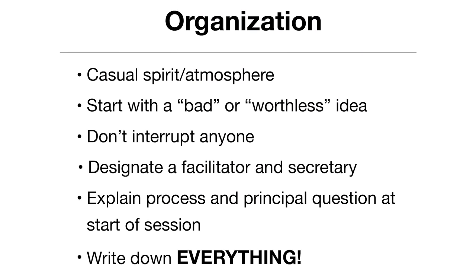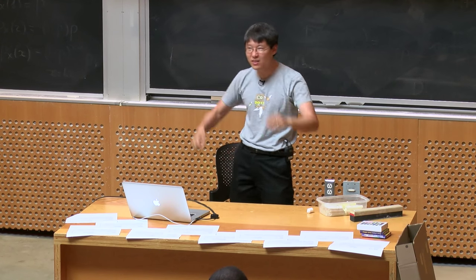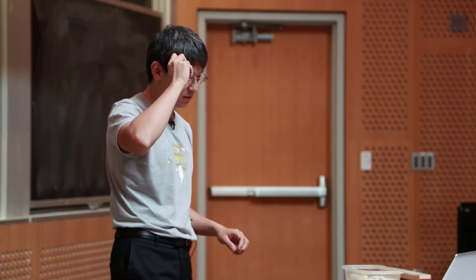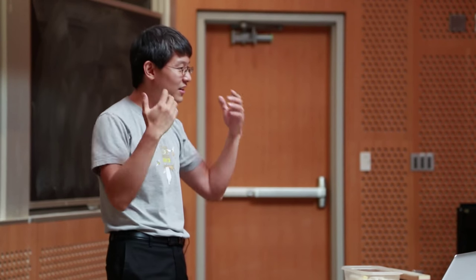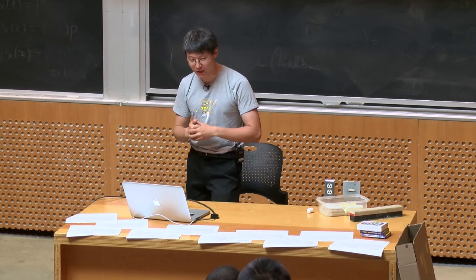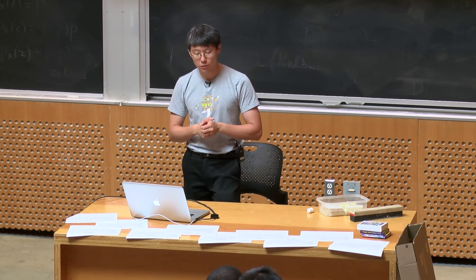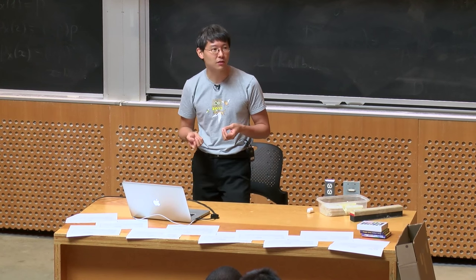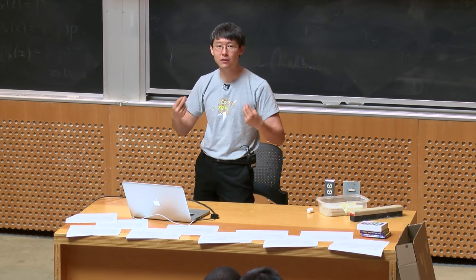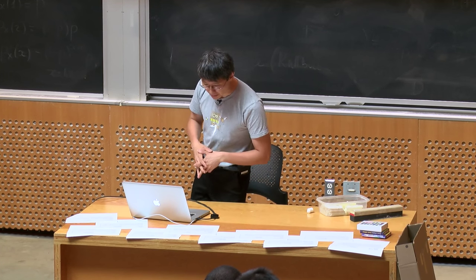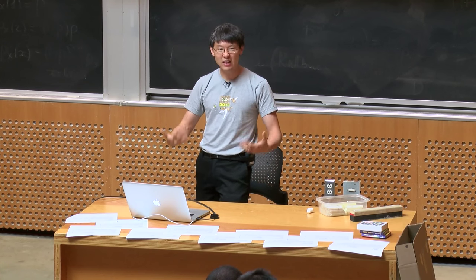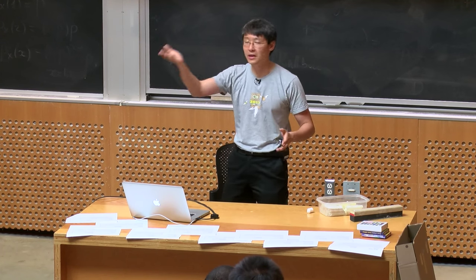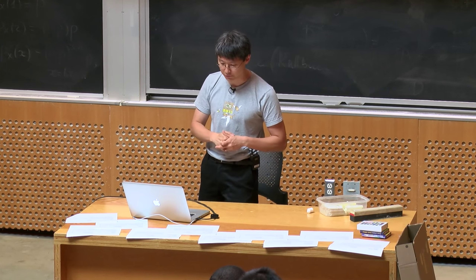Here's how to run a brainstorm session: start with a casual spirit. Begin with your worst idea — the most useless, terrible idea you can think of — just to get things flowing. While someone is speaking, don't interrupt them. Designate a facilitator at the start whose job is to keep things moving. You don't need to explain ideas much because you're not solving the problem here — just get enough out so the secretary can write it down. Make sure everybody understands all four rules before starting, and write down everything.